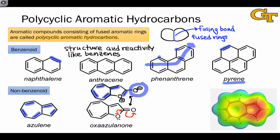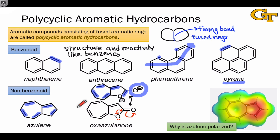A related idea comes up if we look at the electrostatic potential map of azulene. From a classical introductory chemistry perspective, this molecule appears completely non-polar because it's made up of C–C and C–H bonds, none of which are strongly polarized. However, the electrostatic potential map shows that it is actually heavily polarized, with the 7-membered ring having much less electron density than the 5-membered ring. Resonance can help us understand why this polarization leads to a stabilizing effect in the molecule.